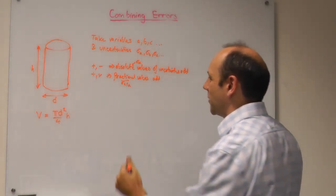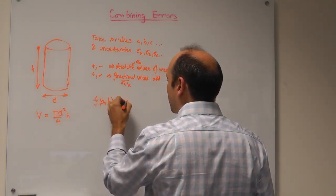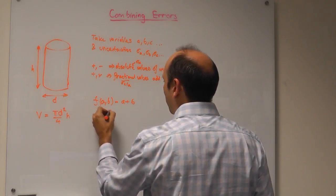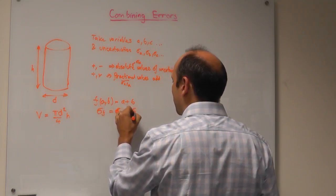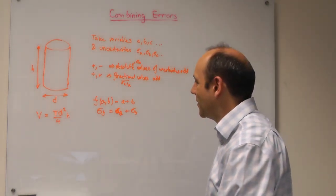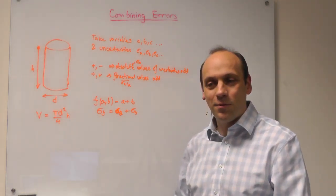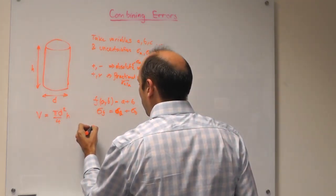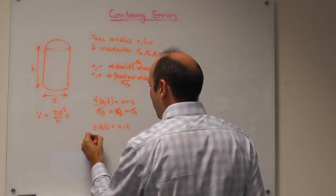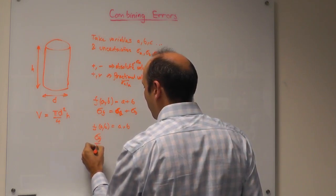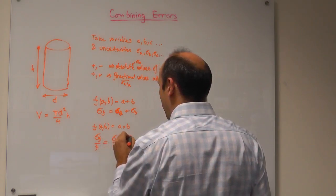Let's think of an example. If I have a function f of variables a and b equal to a plus b, then the uncertainty in f would be the uncertainty in a plus the uncertainty in b. Say I've measured two lengths, five millimetres and three millimetres, and the uncertainty in each is 0.1 — the uncertainty in adding them together would be 0.2. If on the other hand I have a function f equal to a times b, then the fractional uncertainty in f will be equal to the fractional uncertainty in a plus the fractional uncertainty in b.